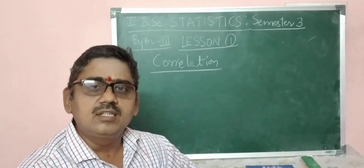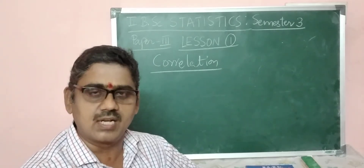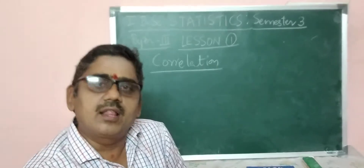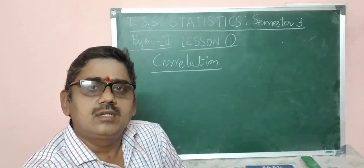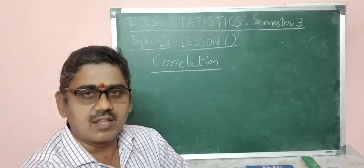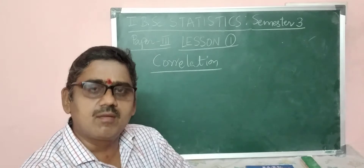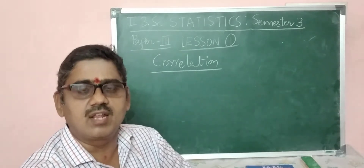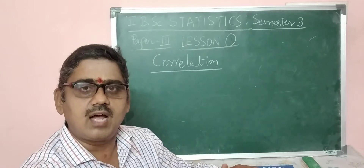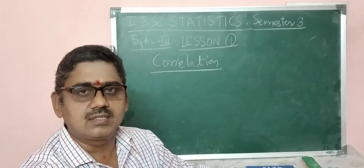The simple definition of correlation: relation between two variables is known as correlation. Another definition: the change of one variable affects the change of the other variable. For example, you have two variables x and y. The change of variable x affects the change of variable y, and such kind of relation is known as correlation.